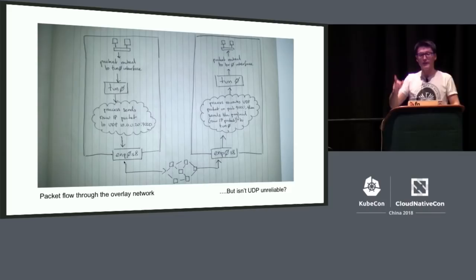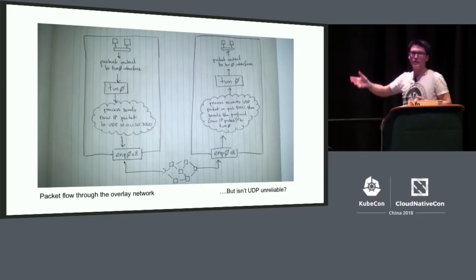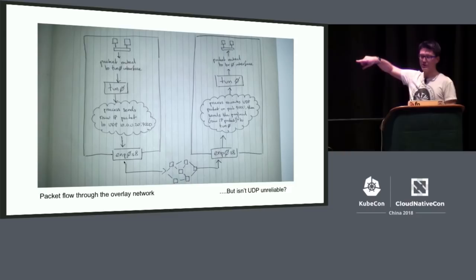Someone once asked: but isn't UDP unreliable? It kind of doesn't matter in this case, because we're getting reliability at a higher level. The TCP stuff on top, inside, is what would do the retries if this failed. You can think of the UDP connection as a bit like just sending it on an Ethernet wire — that's not reliable either, but it doesn't matter because retries are handled by the layer above. So UDP is okay in this case. And this is exactly how the UDP Flannel backend works.